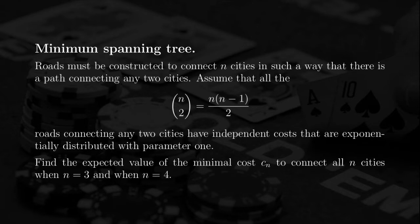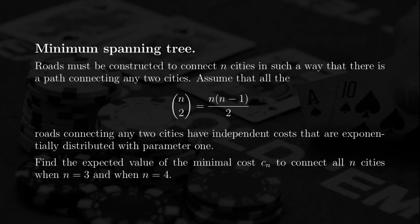Let's assume that you have N cities and you want to construct roads to connect all the cities, such that for any two cities A and B, you can drive your car from city A to city B. This doesn't mean there must be a road connecting A and B directly, but at least there is a path of roads you can use. Probability theory comes in because we assume all possible roads have a cost that is exponentially distributed with parameter 1, and the costs are independent.